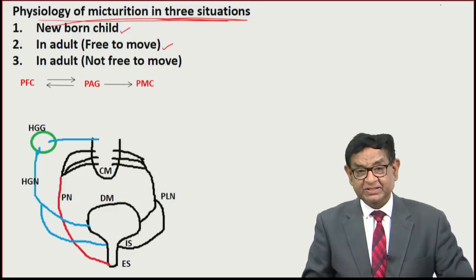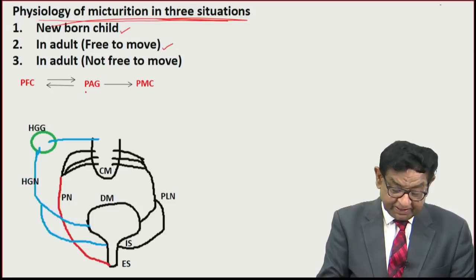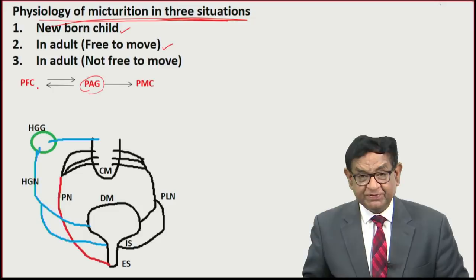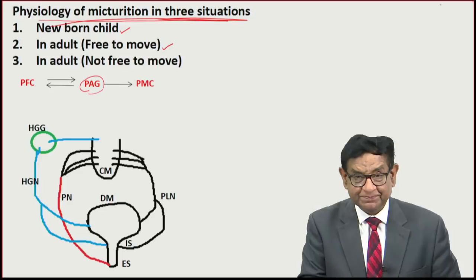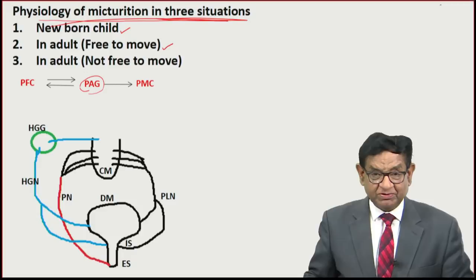Scenario two: the adult is free to move. The bladder gets filled, the message goes to PAG, then to the prefrontal cortex. The PFC gives a message to the PMC, the person goes to the toilet and passes urine normally.